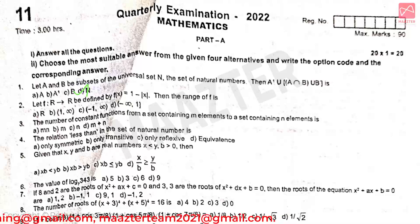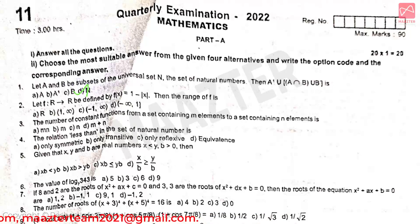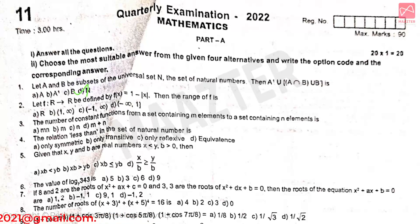Let f such that R belongs to R be defined by f(x) equal to 1 minus mod of x, then the range of F is option D. The number of constant functions from a set containing M elements to a set containing N elements is option C. The relation 'less than' in the set of natural numbers is option B.